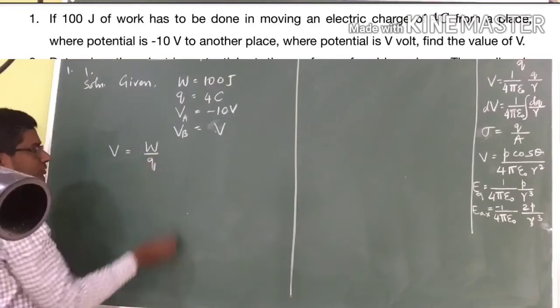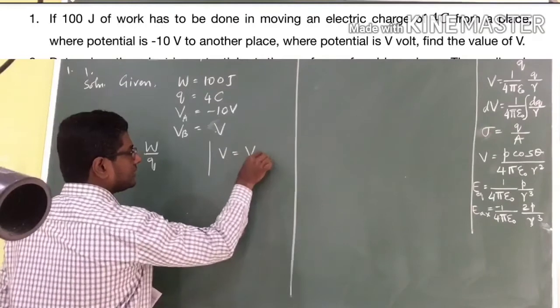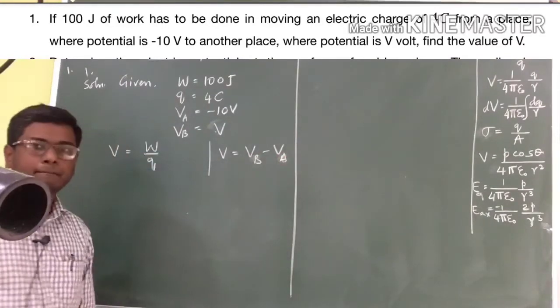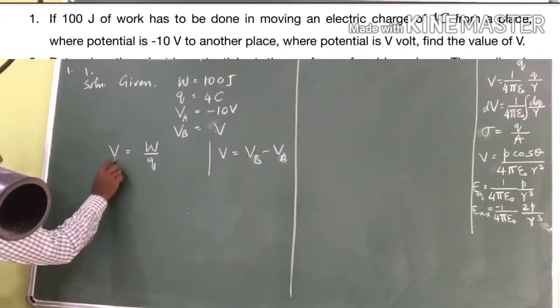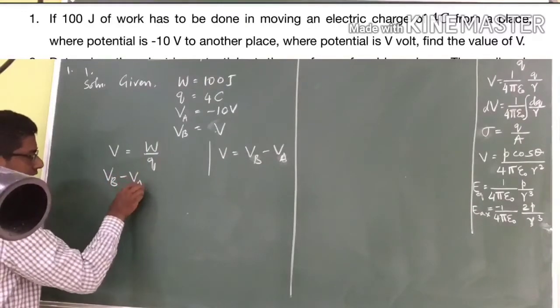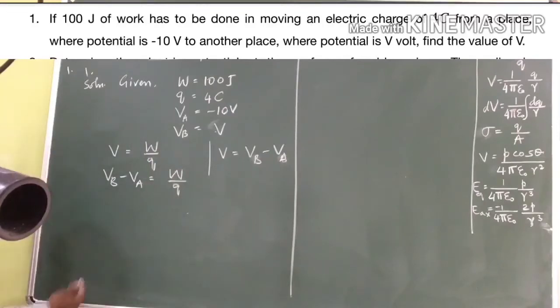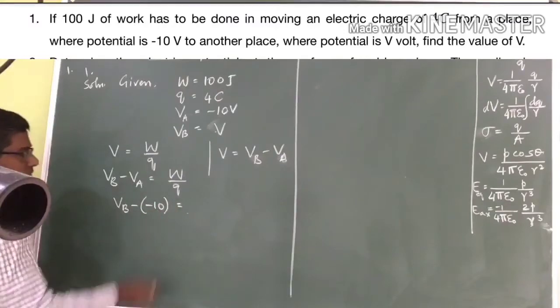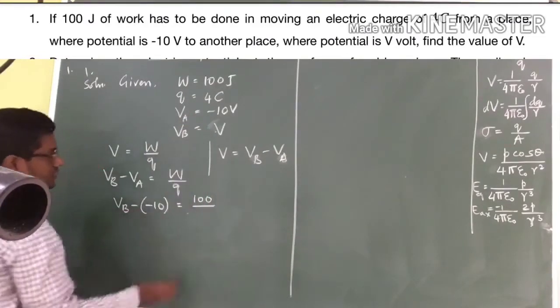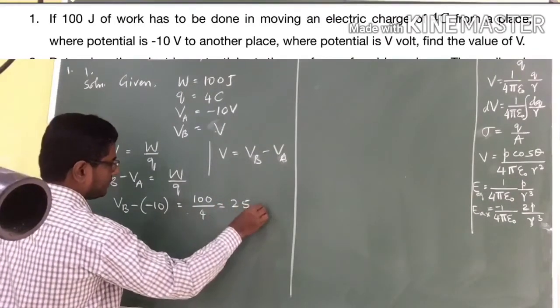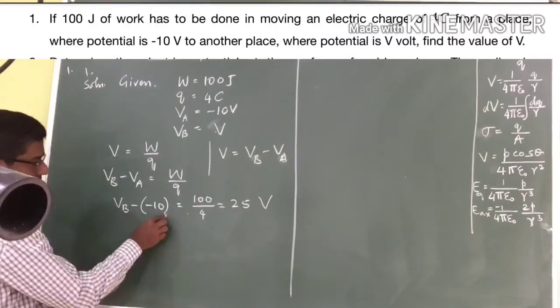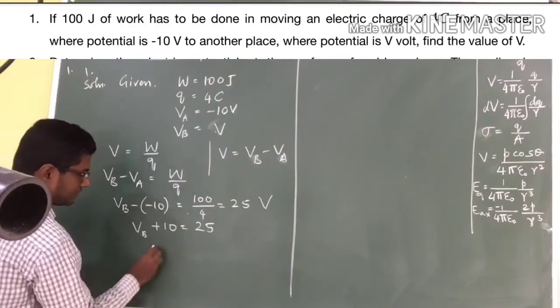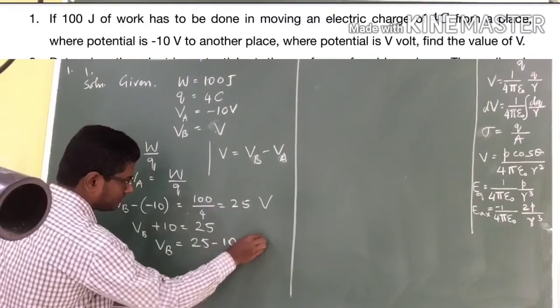V is equal to W divided by Q, but my V is not going to be direct one. Instead, V will be equal to VA minus VB or alternatively I can use VB minus VA because it is always the final position minus the initial position. What I am going to do here is I am going to replace this V by this expression that is VB minus VA equals W divided by Q. Whatever the known quantities are there, we can directly substitute them. It will be VB minus VA is given that is minus 10 equals W is given as 100 Joule and Q is given as 4 Coulomb. This I can directly simplify, it is going to become 25 V. Then what is this? This is VB and that is going to become VB plus 10 will be equal to 25. That means VB will be equal to 25 minus 10 that will be equal to 15 V.